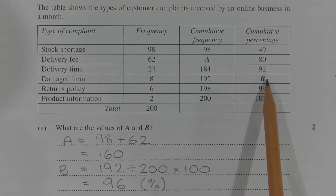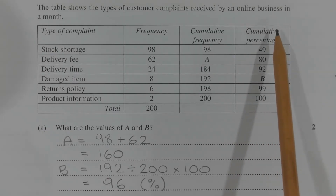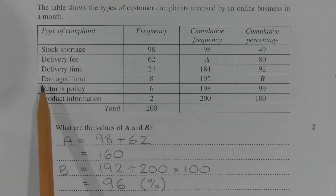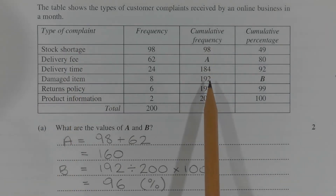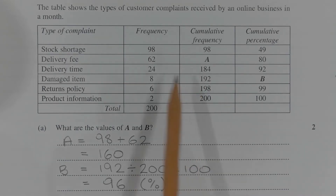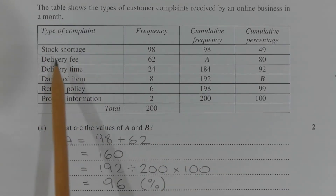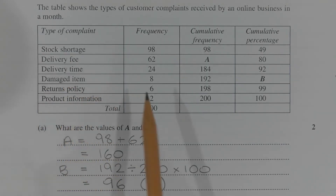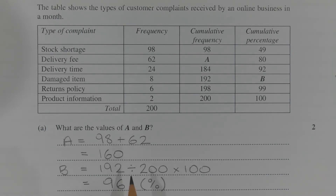Value B represents the cumulative percentage of all complaints up to and including damaged item. Looking at the cumulative frequency column, we can see the number 192. So there are 192 occurrences of complaints that involve stock shortage, delivery fee, delivery time, and damaged item, out of a total of 200 complaints. To find the cumulative percentage, we take 192 divided by 200, multiply by 100 to convert to a percentage, and that equals 96%.